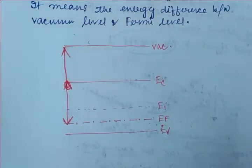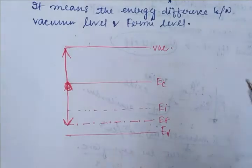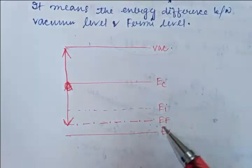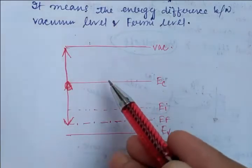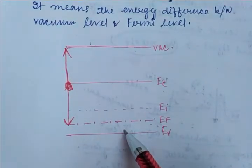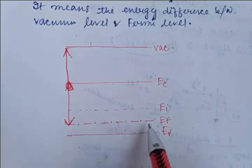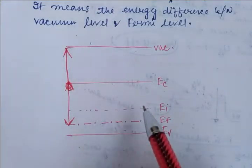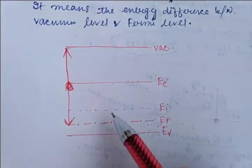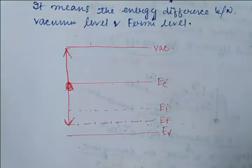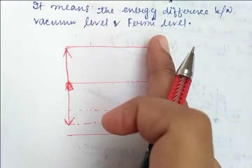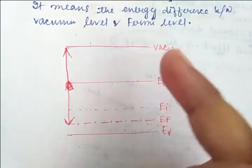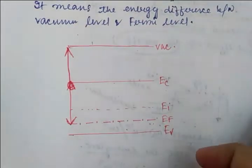What is the need of this work function? If it is the distance between the vacuum level and the Fermi level, we can say that whenever we give enough energy to electrons sitting at the Fermi level, those electrons will be pulled out from the Fermi level to the vacuum — that is, from the metal. That is how the work function is justified.